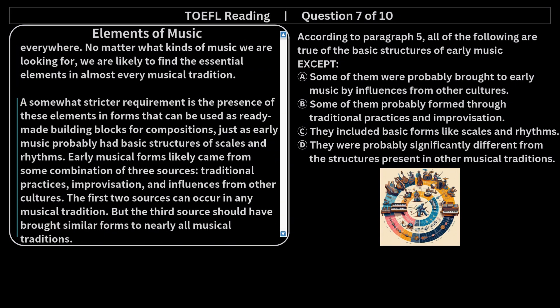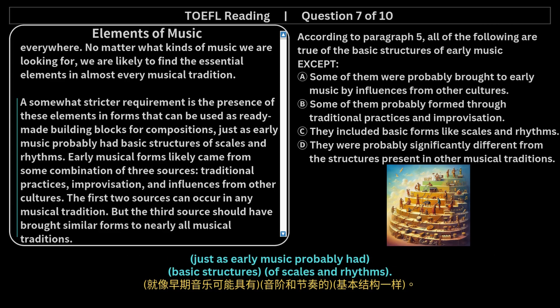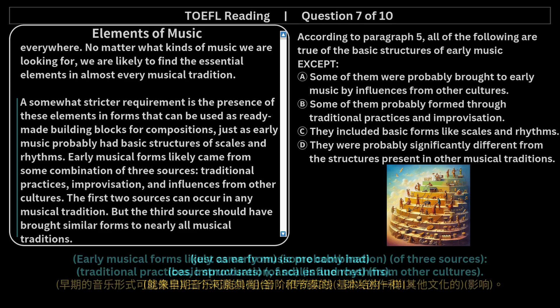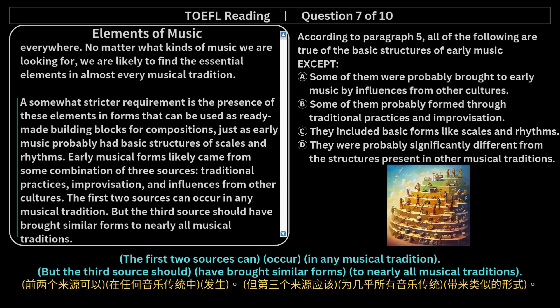Elements of Music. A somewhat stricter requirement is the presence of these elements in forms that can be used as ready-made building blocks for compositions, just as early music probably had basic structures of scales and rhythms. Early musical forms likely came from some combination of three sources: traditional practices, improvisation, and influences from other cultures. The first two sources can occur in any musical tradition, but the third source should have brought similar forms to nearly all musical traditions.